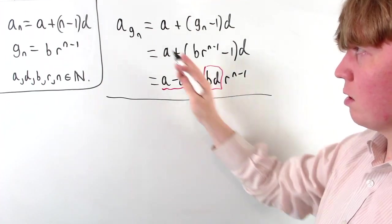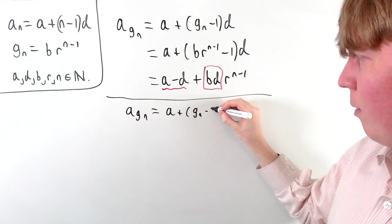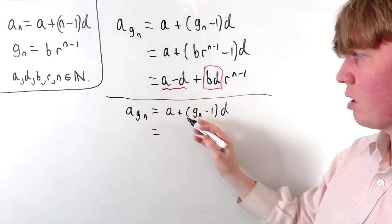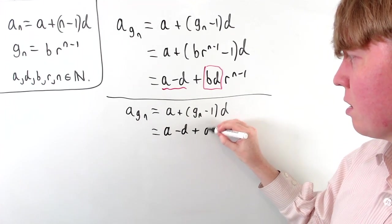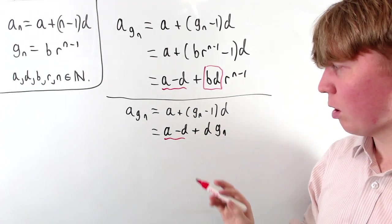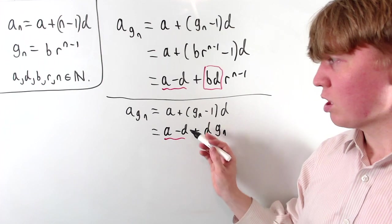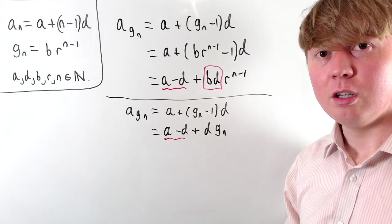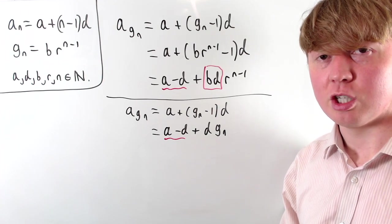A nice way of interpreting this is to go back to the original step: a g_n equals a plus g_n minus one times d, which can be rewritten as a minus d plus d times g_n. We have a small constant term being added, plus a multiple of our geometric sequence. This reflects the fact that we have a starting term in an arithmetic sequence, but we advance along it by the number of steps given by a geometric sequence, going further and further each time.